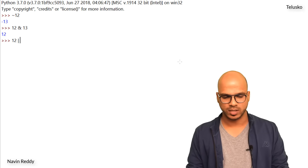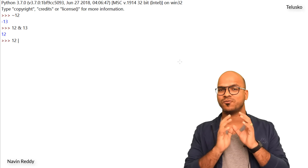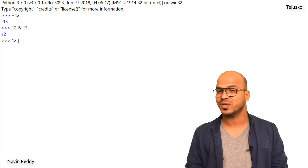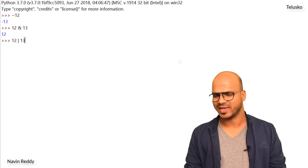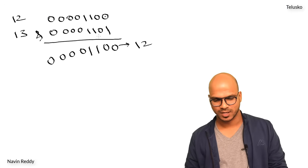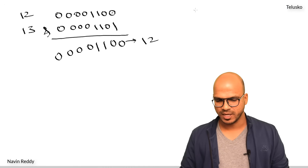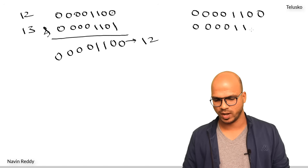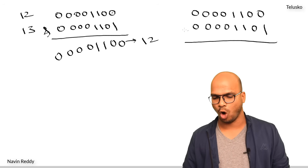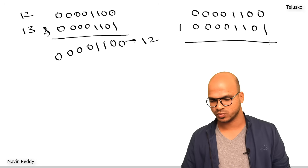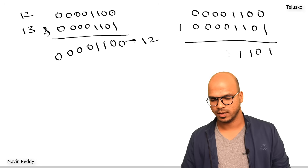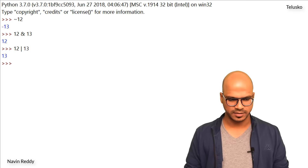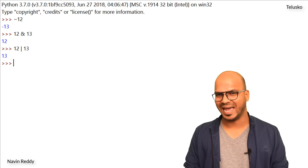Let's do OR. For OR we use the pipe symbol, which is above the Enter button. When you say 12 OR 13 — let's calculate first. For 12: 0 0 0 0 1 1 0 0. For 13: 0 0 0 0 1 1 0 1. For OR, if any bit is 1 the output is 1. So we get 0 0 0 0 1 1 0 1, which is 13. Let's verify — if I press Enter, we got 13! So that's how bitwise AND and OR work.